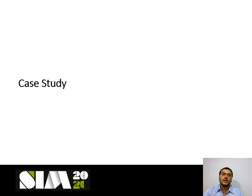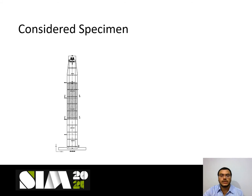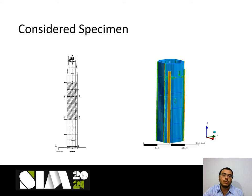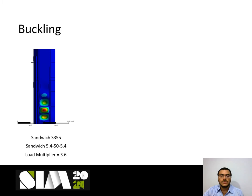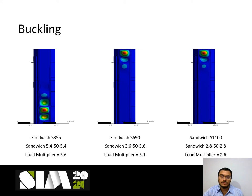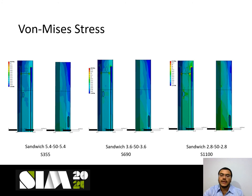For the case study, a Housman structure is considered and the middle portion — which is more dominated by compression — is selected. The structure is redesigned using sandwich panels with S355, S690, and S1100. Both buckling and static analyses are done. For buckling analysis, all three new designs show a load multiplier greater than 1.5, satisfying the buckling criteria. Von Mises stress under 12 load cases is calculated and the occurring stress is well below the yield strength of the material, so the Von Mises criteria is also fulfilled.